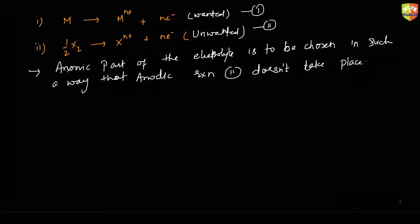We will choose the anionic part in such a way that by any means — whether it is over potential or electrode potential — this unwanted reaction won't take place. We have discussed the over potential concept in electrochemistry, and depending on those values of over potential and electrode potential, we choose the anionic part.